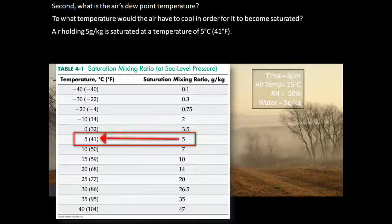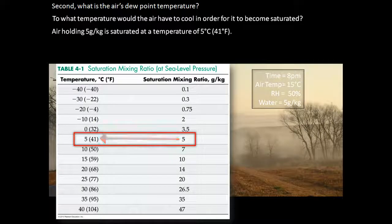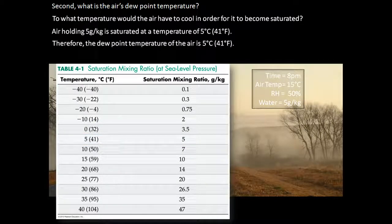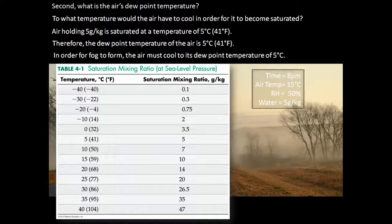Looking in the right-hand column first, we find 5 grams per kilogram, which corresponds with a temperature of 5 degrees Celsius. Therefore, the dew point temperature of the air is 5 degrees Celsius. In order for fog to form, the air must cool to its dew point temperature of 5 degrees Celsius.